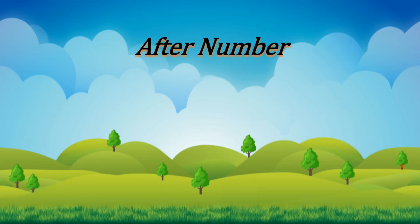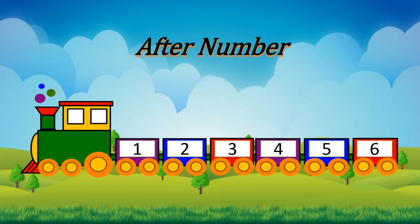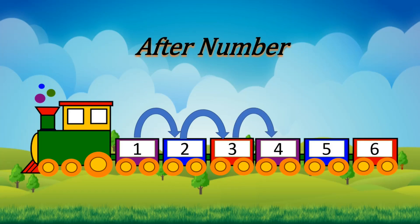Kids, do you see this train? Yes, it has numbers on it. Now let's do forward counting. Kids, what number comes after 1? Yes, it's number 2. After 2, it's number 3. After 3, it's number 4. After 4, it's number 5. After 5, it's number 6.